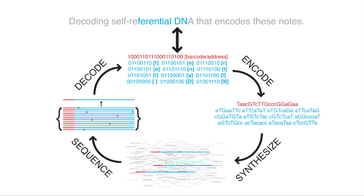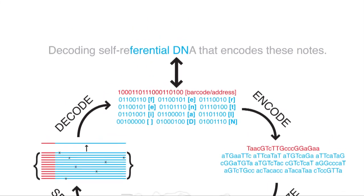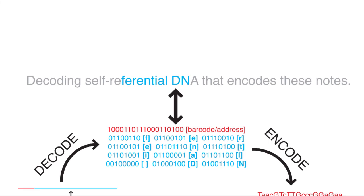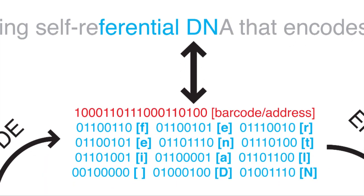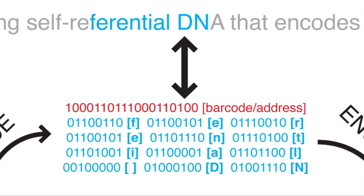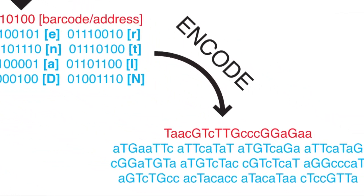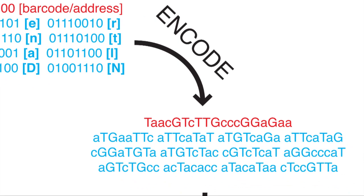The book we encoded was actually a book that George has written, and in the book is a section on this particular piece of work. The sentence being shown in the image is almost a meta-sentence from the book that says 'decoding self-referential DNA encoding these nodes.' We show how, starting with the F in 'referential' and ending in the N in 'DNA,' we take it to individual bits corresponding to ASCII codes and a barcode. Then we take those ones and zeros and convert them to A, T, C, and G — DNA bases — where T and G stand for one, and A and C stand for zero.